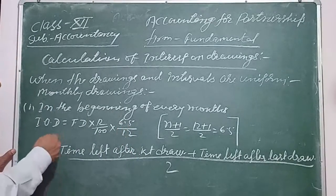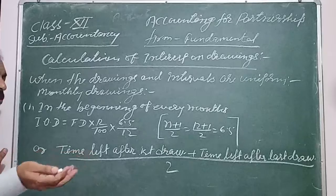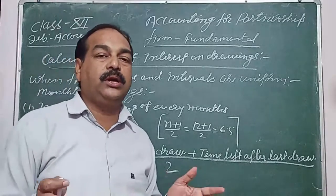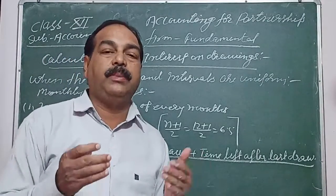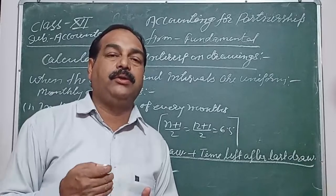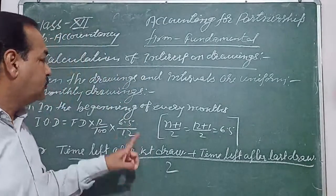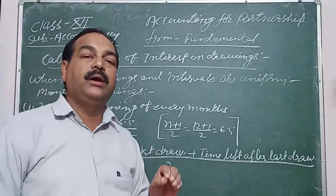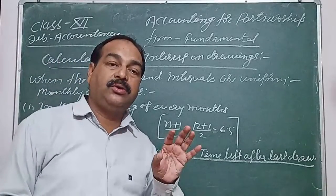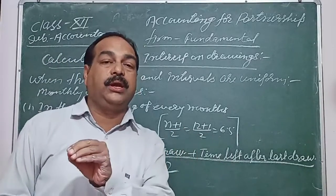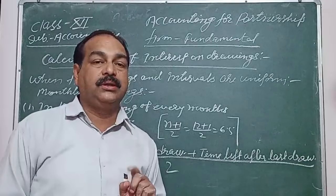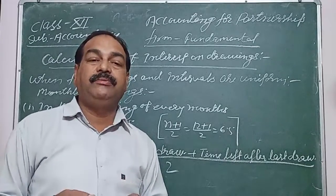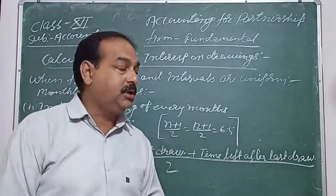Using this, you can easily calculate the interest. Total Drawings × Rate/100 × 6.5/12. We take 6.5 only when drawings occur for the whole year of 12 months; otherwise it may change. For example, if drawings happen for only 7 months, n will be taken as 7.